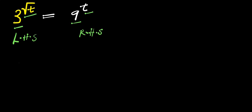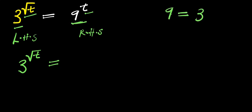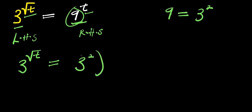I can have 3 raised to the power of square root of t. And this equals 9, which is a perfect square. So I can write 9 equals 3 to the power of 2. I'm going to replace this 9 here with 3 to the power of 2. So I have 3 to the power of 2, and this is raised to the power of t.